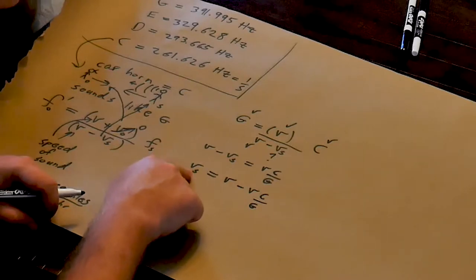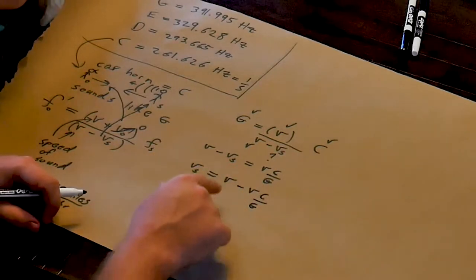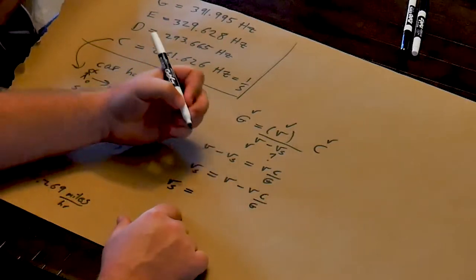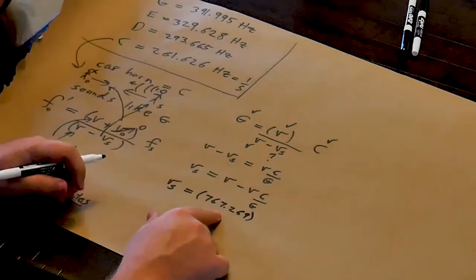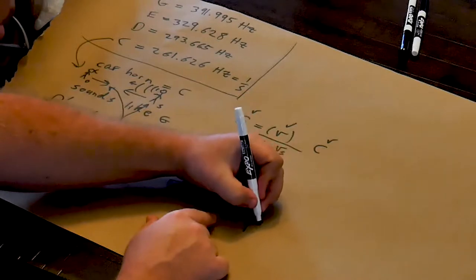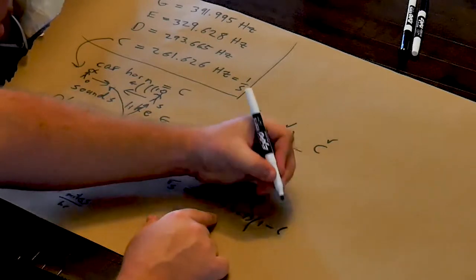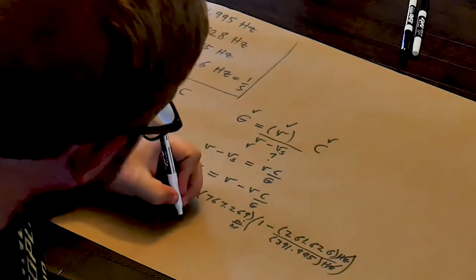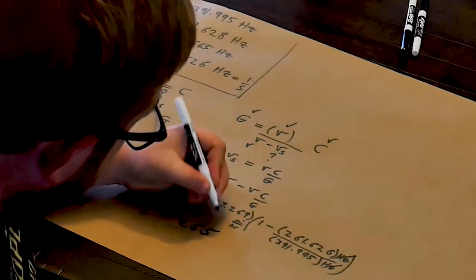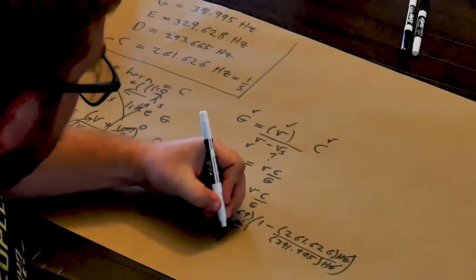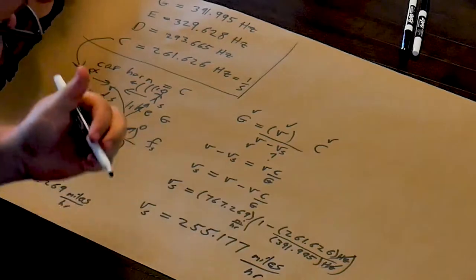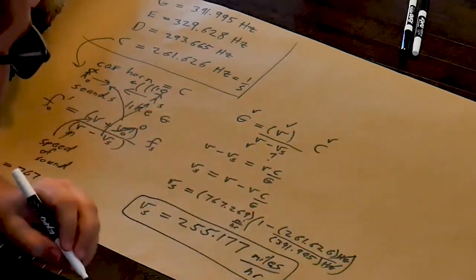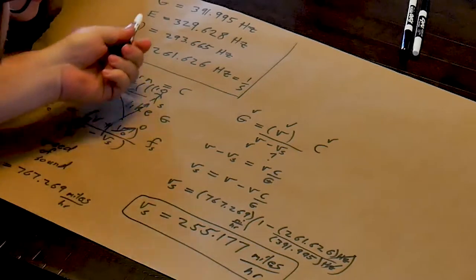Now we know all of these things, so we can just plug them in. The velocity of the source is going to equal the speed of sound times one minus the frequency of C divided by the frequency of G. When we calculate it, we get 255.177 miles per hour. So that's how fast our sound source needs to move for us to turn the C note into a G note.